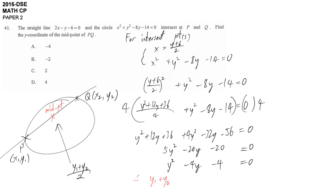y1 plus y2 should equal to negative b divided by a. Here that means negative negative 4 divided by 1, which is 4. So the midpoint is equal to 4 over 2, which is equal to 2.